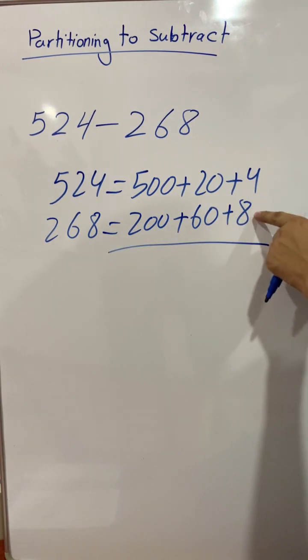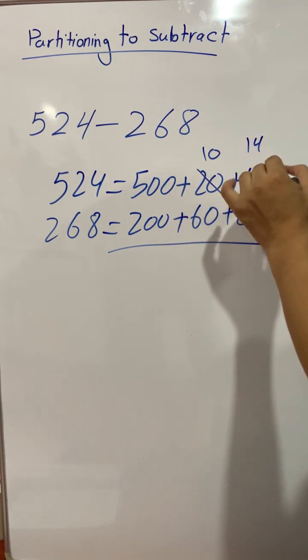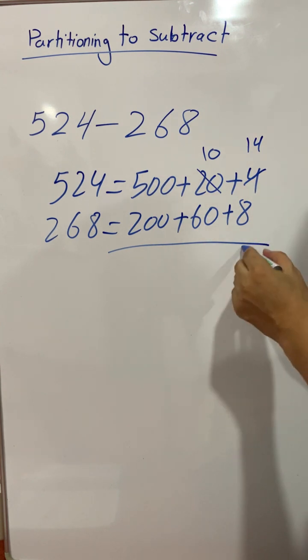So 4 minus 8, we cannot subtract 8 from 4. So we take 10 of 20 and 10 will be left here, and 10 plus 4 is 14. Now 14 minus 8 is equal to 6.